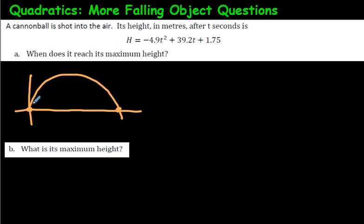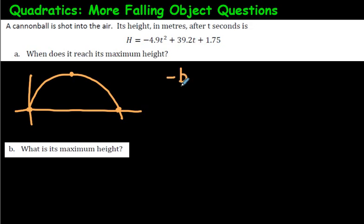The ball doesn't always get shot from ground level — it could be shot from higher up — but basically we have an upside-down, negative parabola. We're going to use this equation to figure out the maximum height. I have a video on how to get the answer very quickly using the formula negative b over 2a. That is such a quick way, and I'll show you that right now.